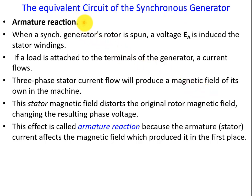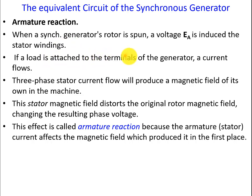First of all we must understand what armature reaction is — that is a very important concept. When a synchronous generator's rotor is spun, a voltage EA is induced in the stator windings. If a load is attached to the terminals of the generator, a current will flow in the stator, and three-phase stator current flow will produce a magnetic field of its own in the machine.